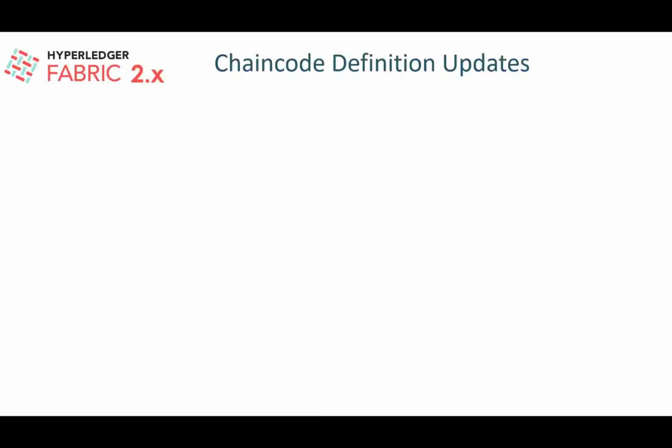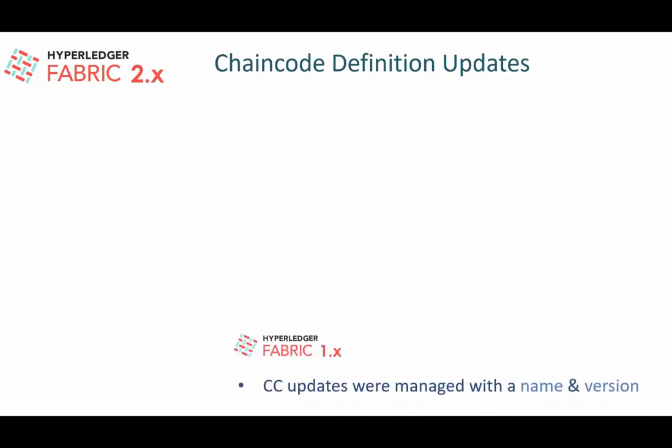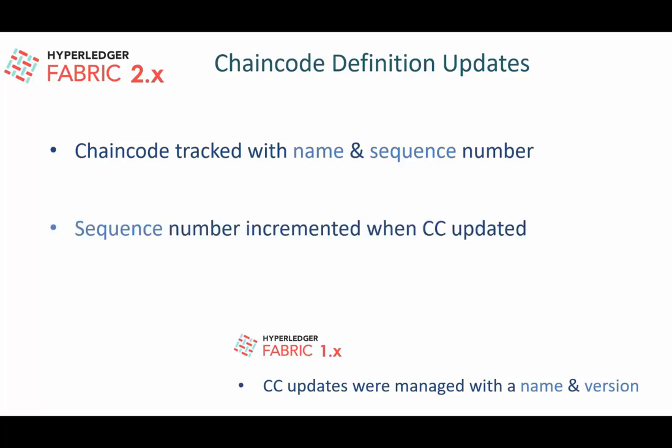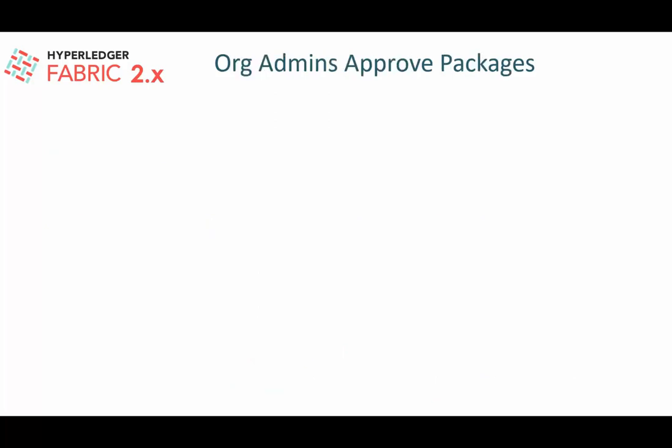Chaincode definition tracking has also changed. In version 1.x, chaincode updates were tracked by name and a version controlled by administrators. In Fabric 2.x, chaincode is tracked by name and a sequence number, which is incremented every time the chaincode definition is updated. Version is still present in Fabric 2.x as a parameter, but it is managed outside of the Fabric runtime — the runtime does not enforce any rules on the version parameter.